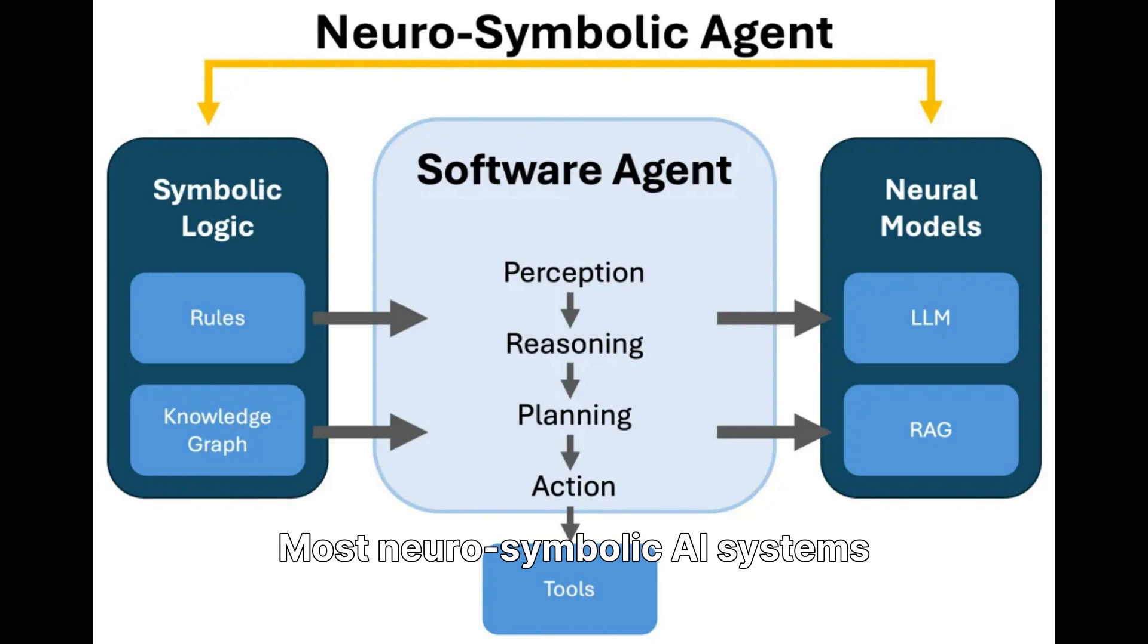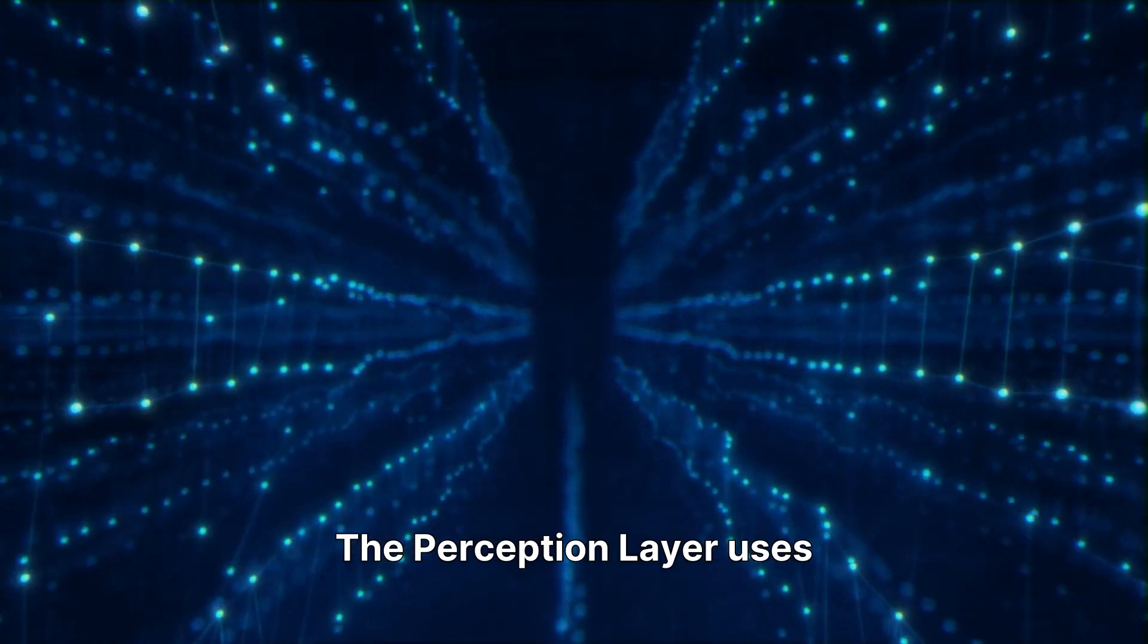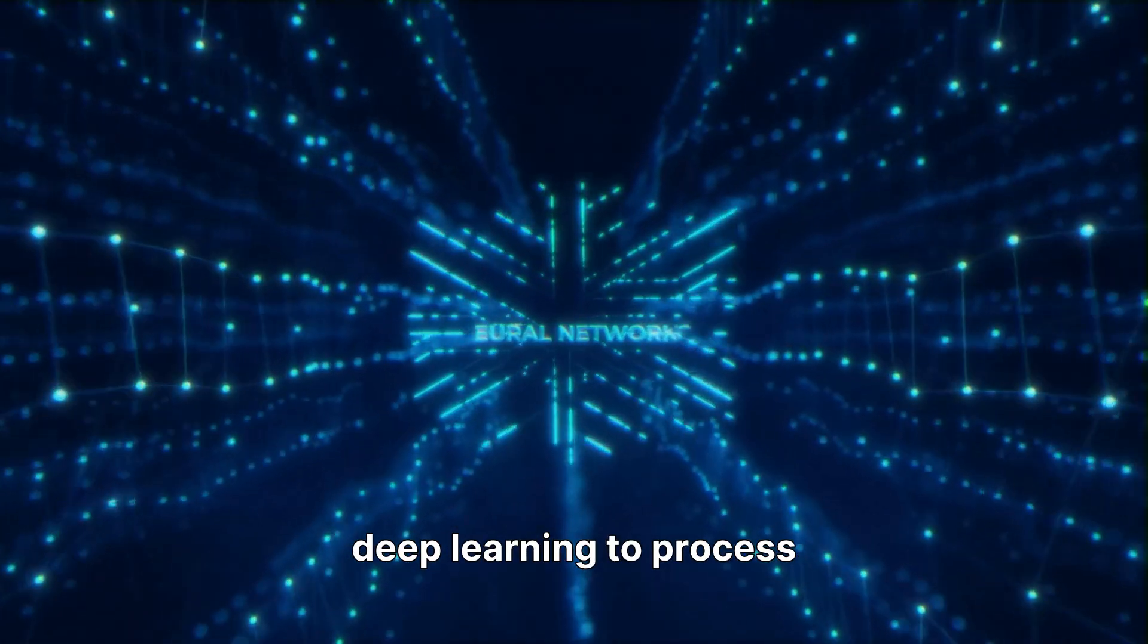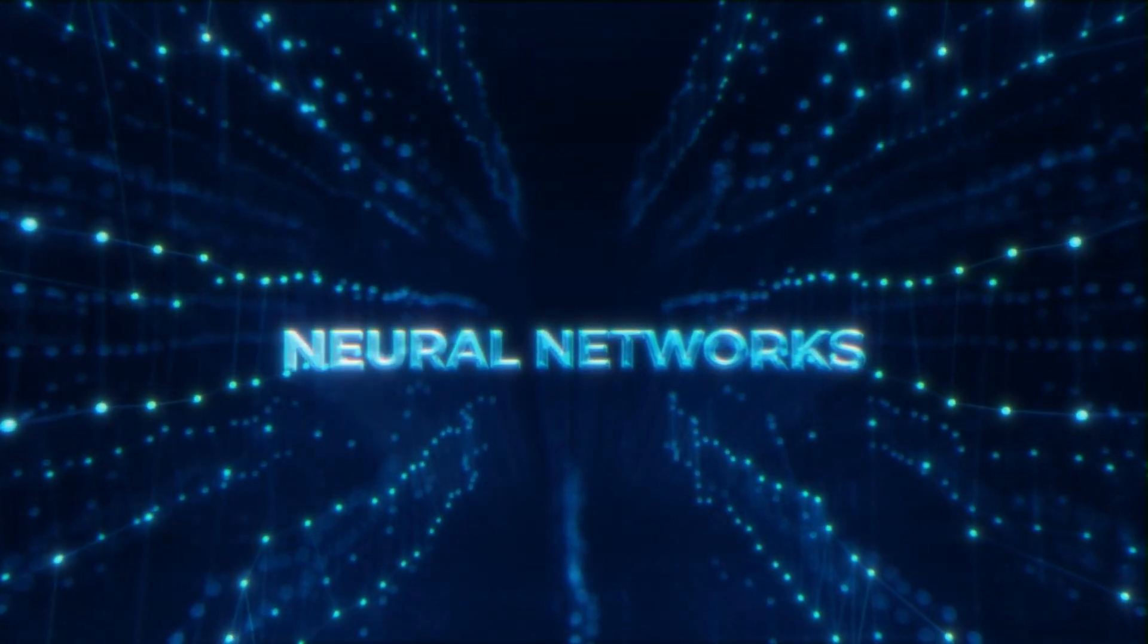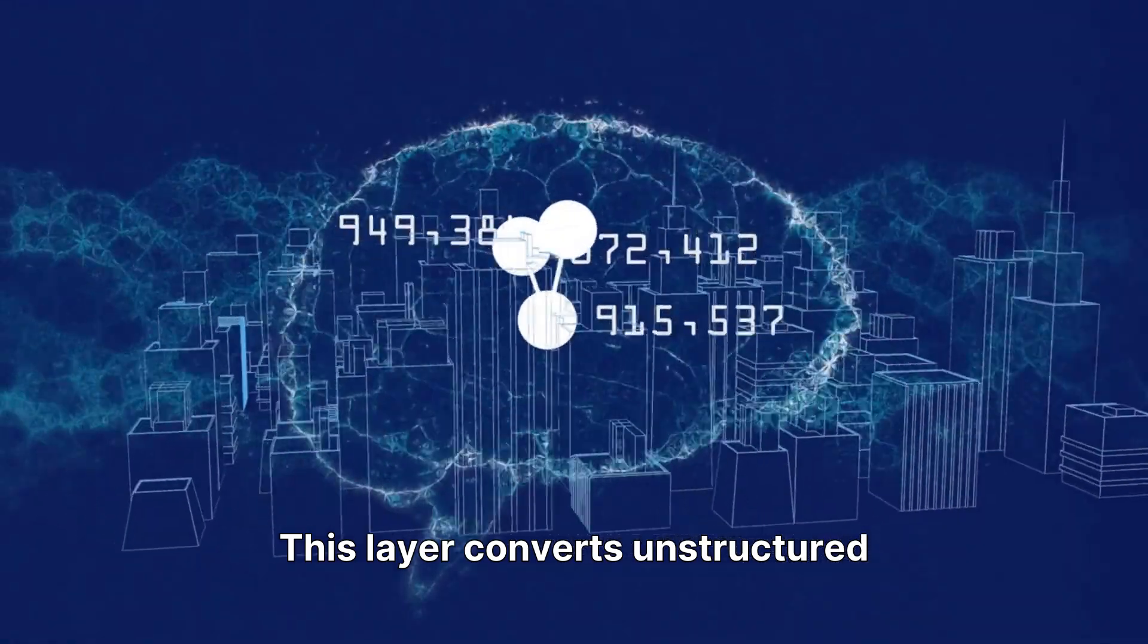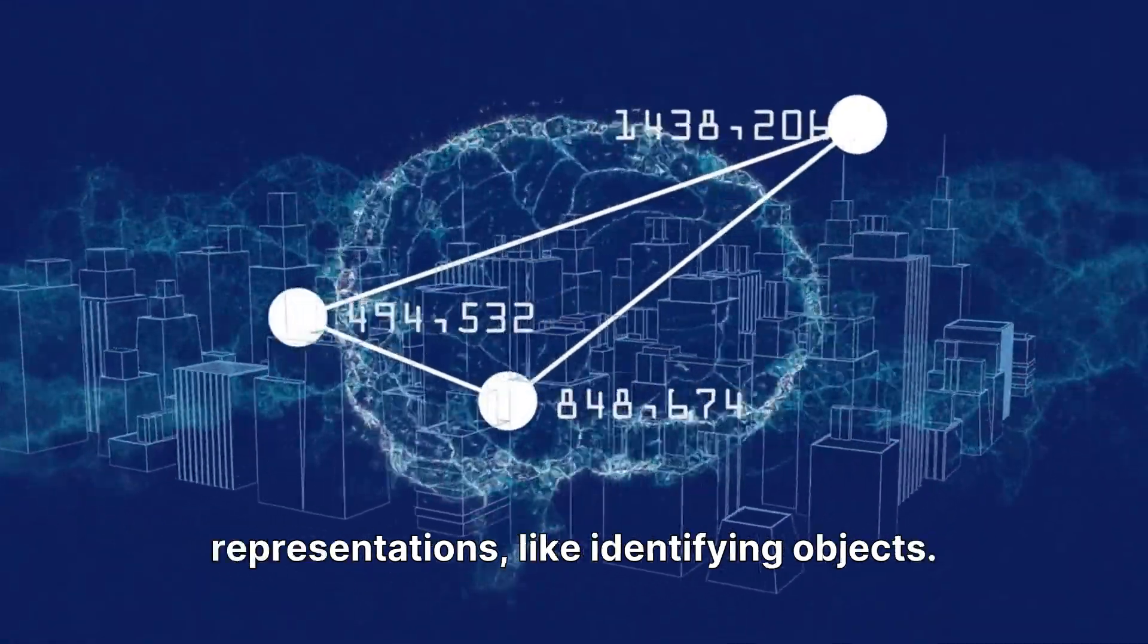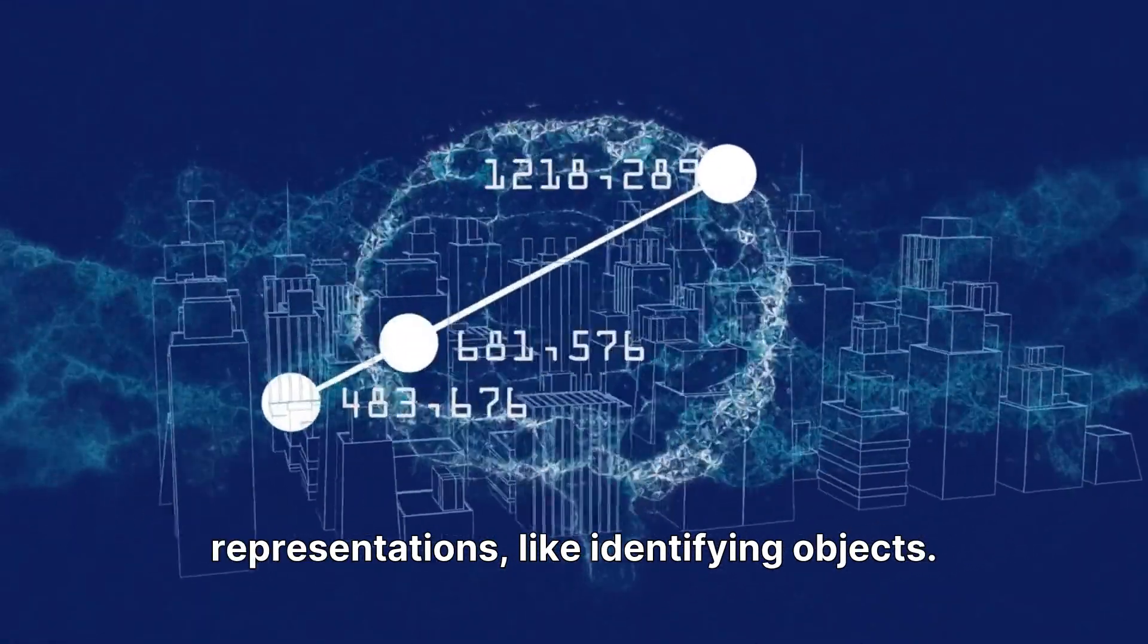Most neurosymbolic AI systems involve three layers: perception, reasoning, and learning and feedback. The perception layer uses deep learning to process raw input data like images, text, or audio. This layer converts unstructured data into structured symbolic representations like identifying objects.